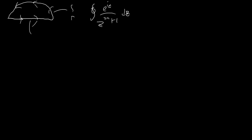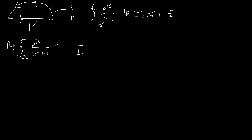This lower branch is going to be the integral from negative infinity to infinity of e to the iz over x to the 2n plus 1 dx. So this is our full contour integral, and it's going to equal 2πi times the sum of the residues. That's going to be equal to the gamma integral plus the real axis integral. Now the gamma integral will go to zero — we'll show this using Jordan's lemma.